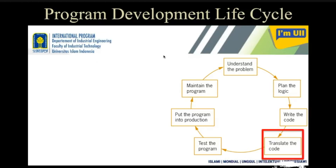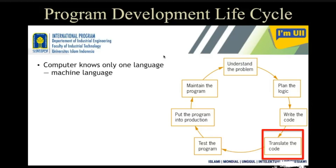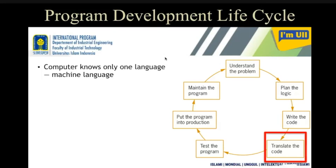Planning is important, and for planning you have different tools — those tools will be explained after two slides. After writing the code, you have to translate it. It's not you but someone on your behalf who will translate the code. You write the code in English alphabet following some syntax, and that programming language code needs to be converted into a format understandable by the machine.